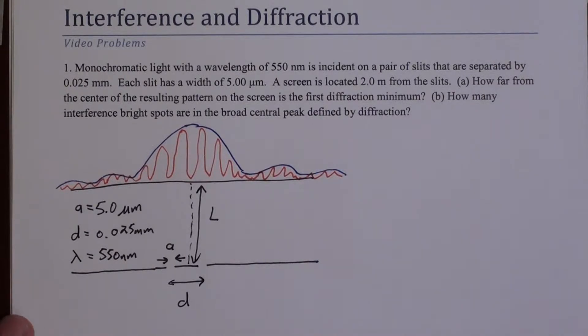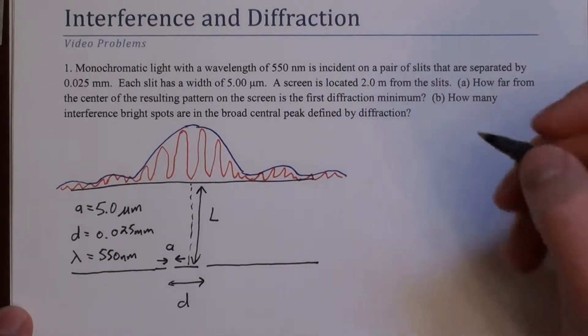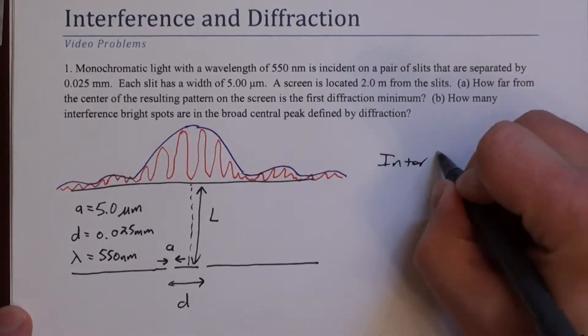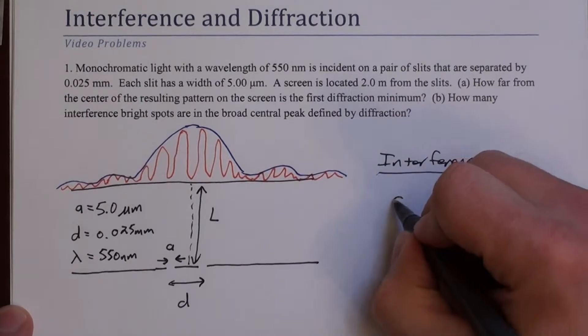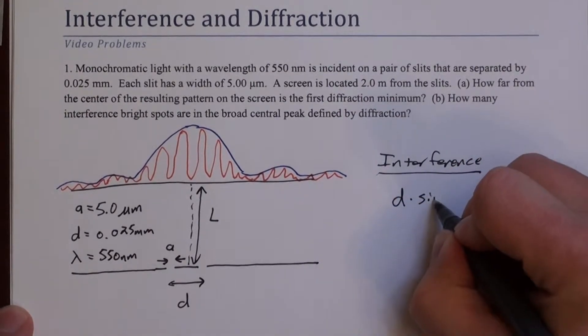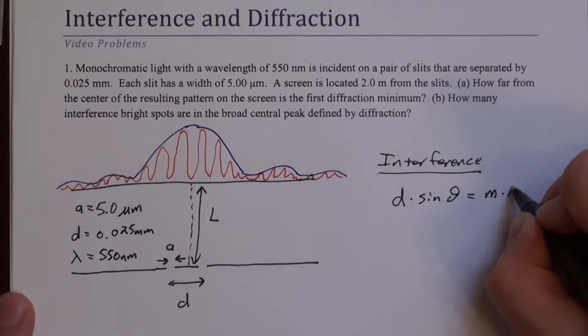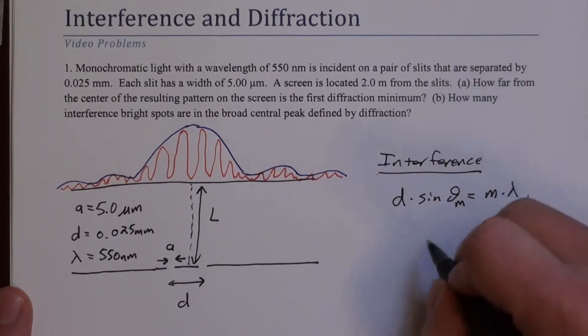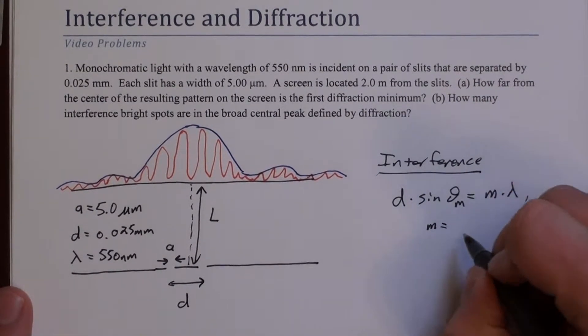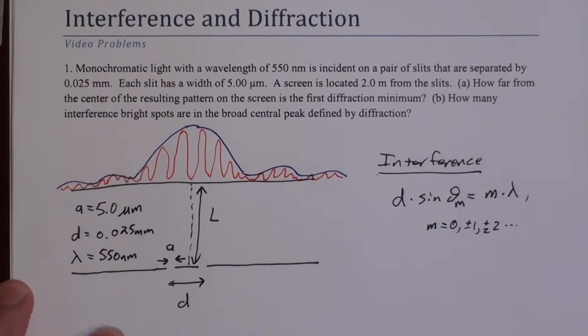So let's remind ourselves quickly how this depends on the distances here, the wavelengths and things. For interference, we say that D times sine theta equals an integer number of wavelengths. So that's M lambda, where M can be 0, plus or minus 1, plus or minus 2, and so forth.